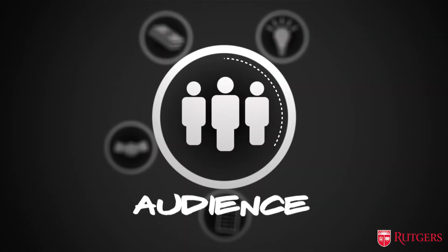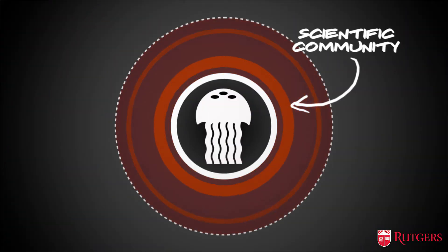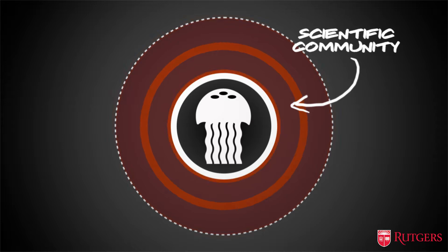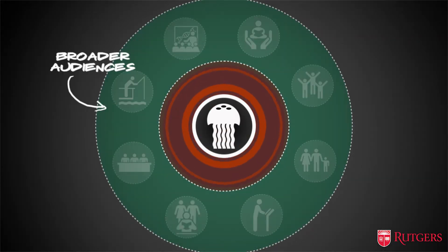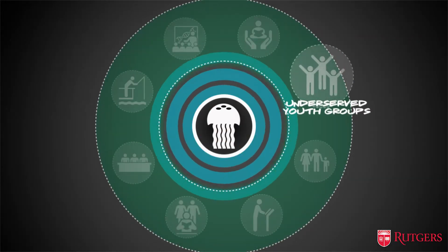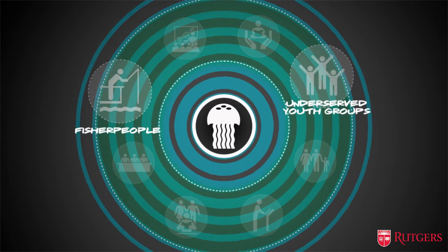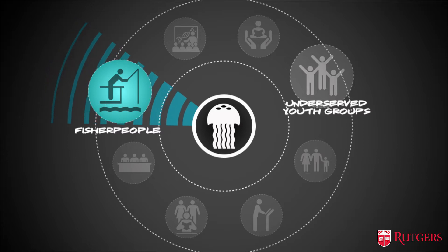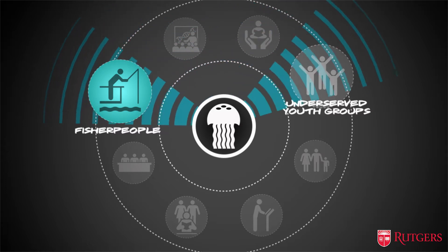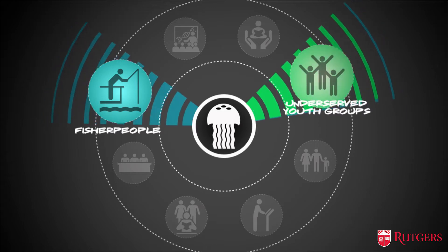Let's start with Audience. You need to show that you can communicate the importance of your work outside your discipline or the scientific community. This could be anything from youth groups to members of an industry, like fisher people. The audiences that you target will influence how you present your work. What resonates with one group might not resonate with another, so you have to modify your message accordingly.